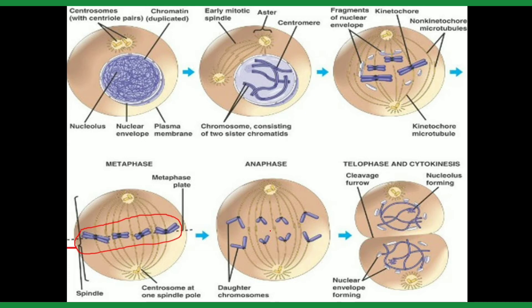After the metaphase plate forms, the sister chromatids separate to become daughter chromosomes. Then in telophase, they fully separate, cytokinesis starts, and a new nuclear envelope forms around each set of chromosomes.